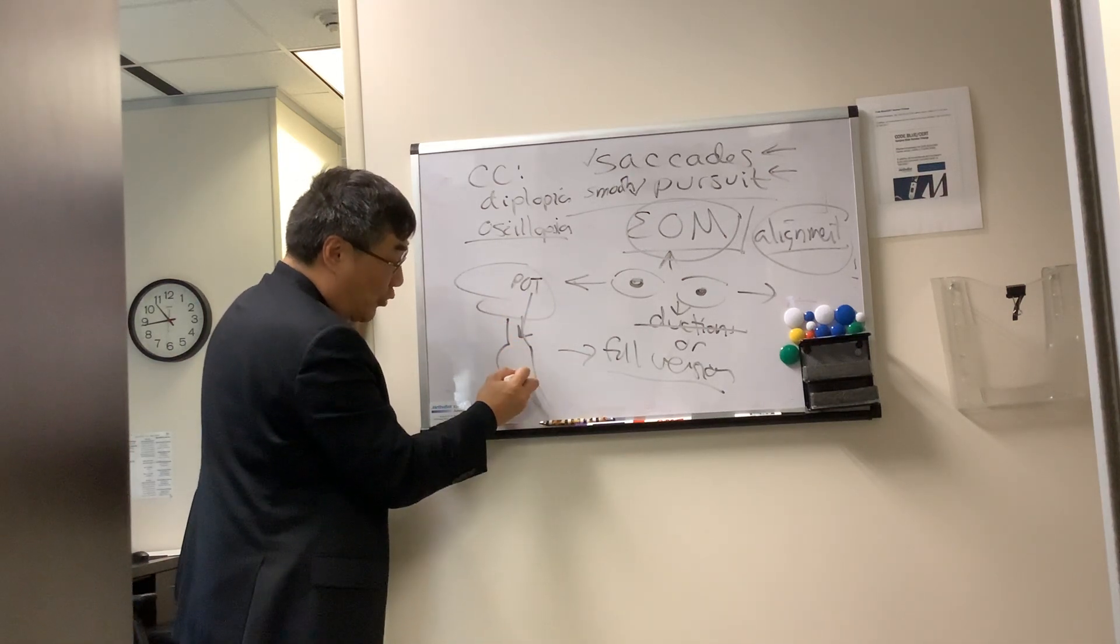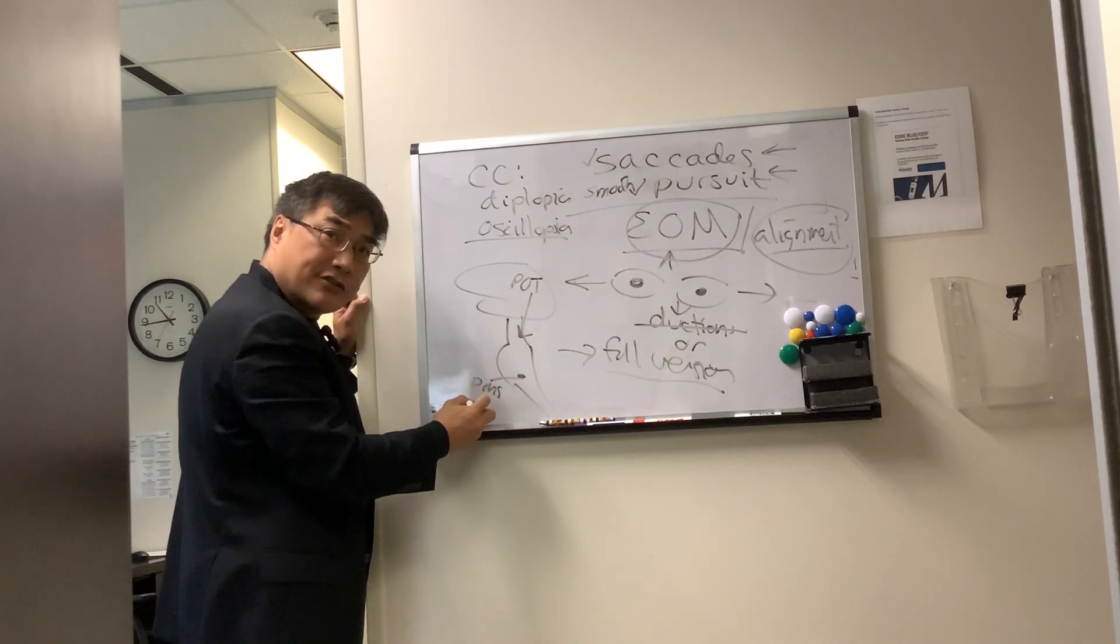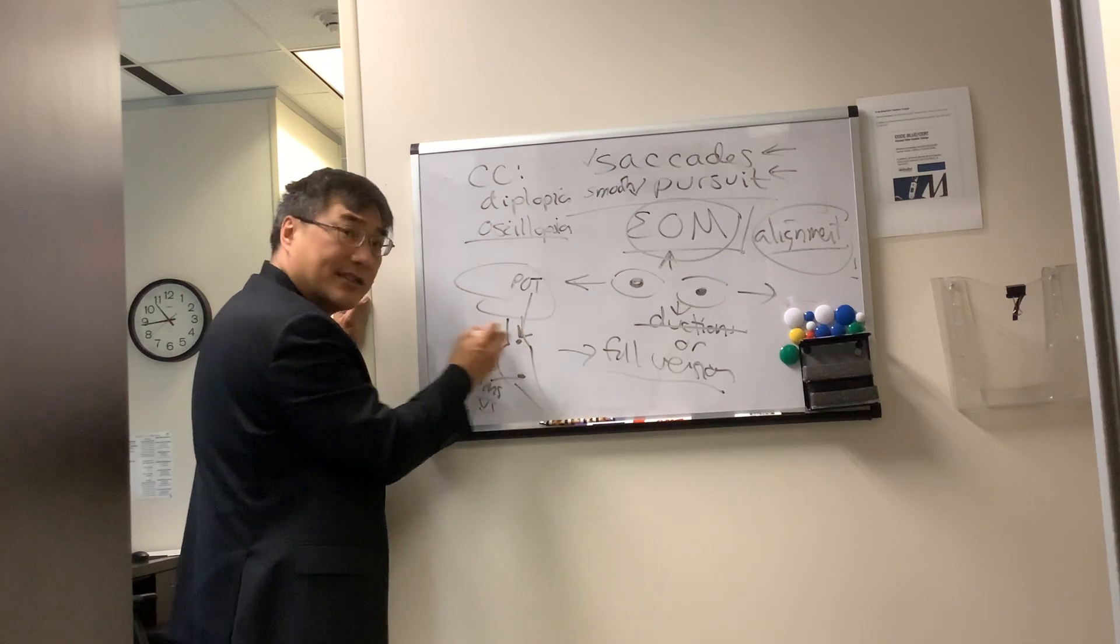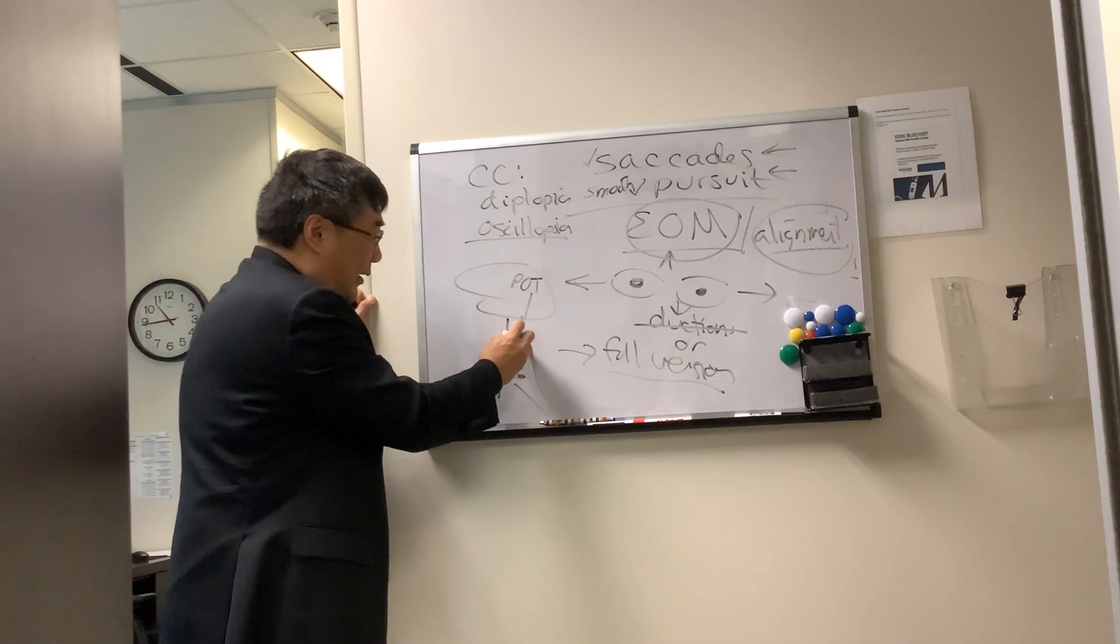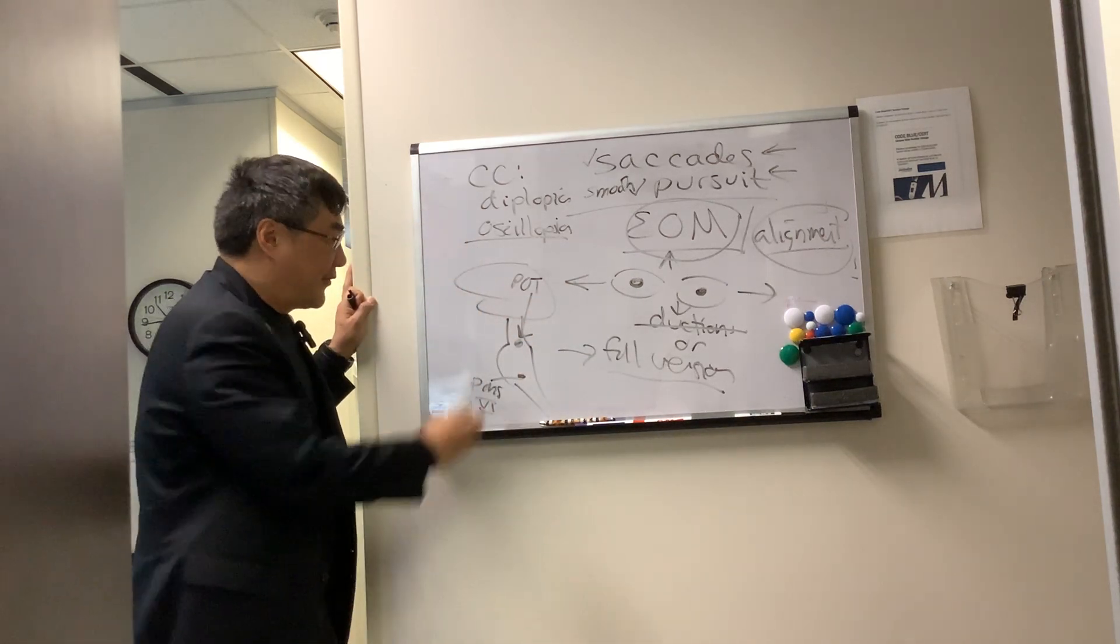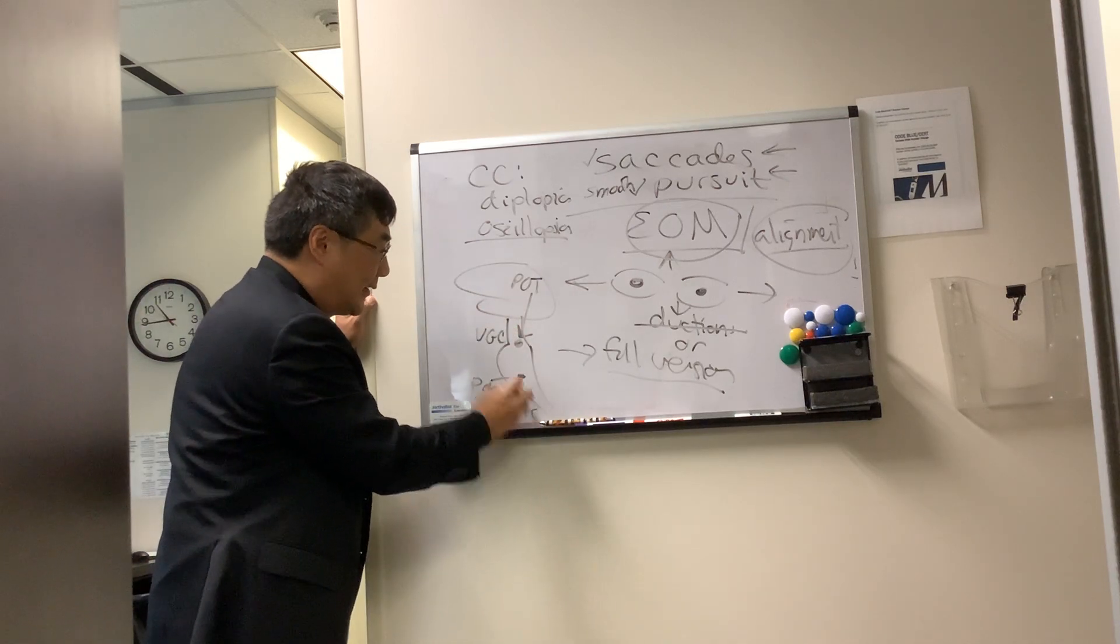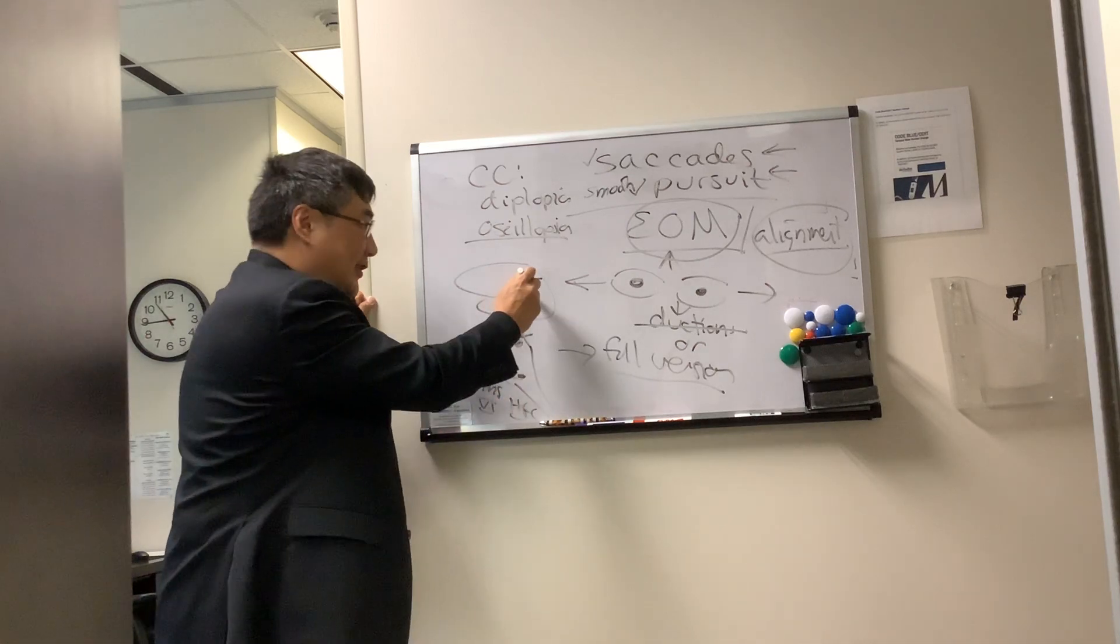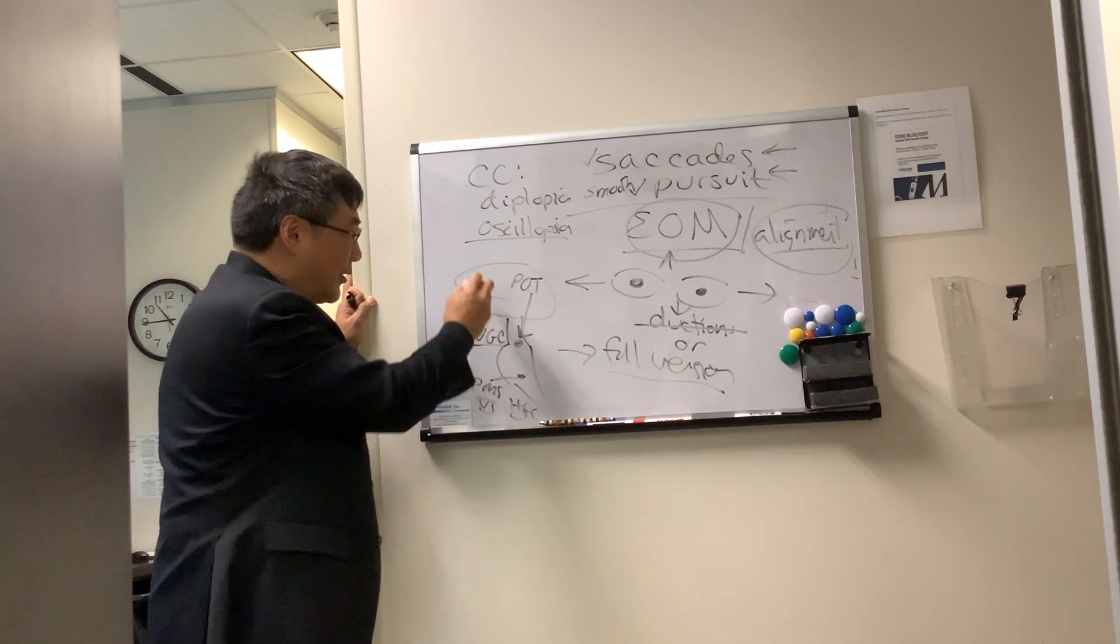And for horizontal gaze, that's in your pons through the sixth nerve nucleus and the parapontine reticular formation. And in the midbrain, that's the vertical gaze center, interstitial nucleus of Cajal, area of Darkswitz, rostral interstitial medial longitudinal fasciculus. That's the vertical gaze center. So we've got a horizontal gaze center and a vertical gaze center in your brainstem, which are the final common pathways for receiving pursuit information from the ipsilateral parietal occipital temporal lobe.